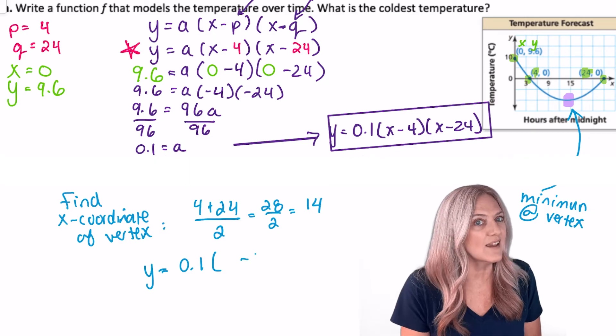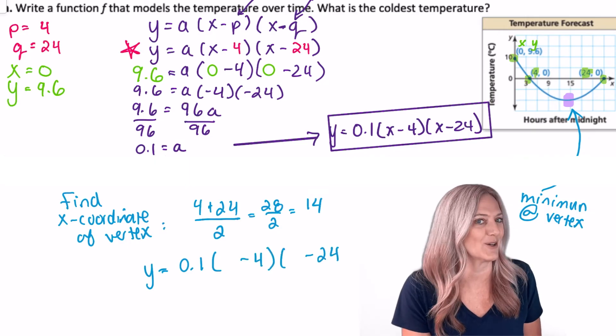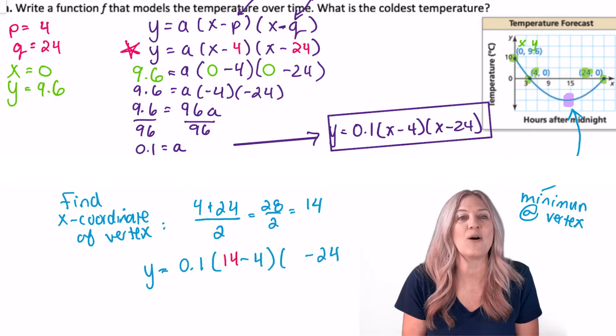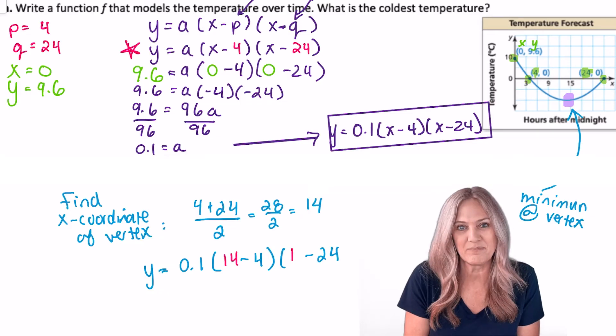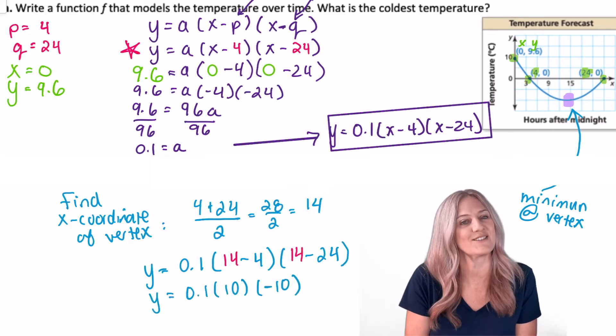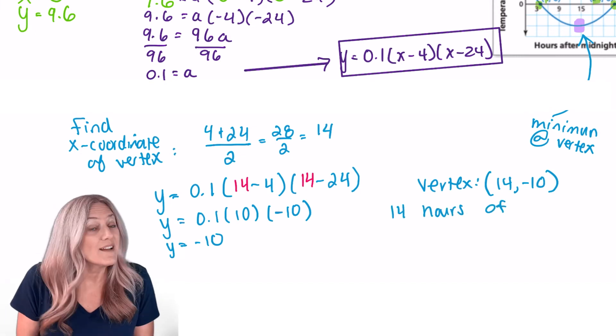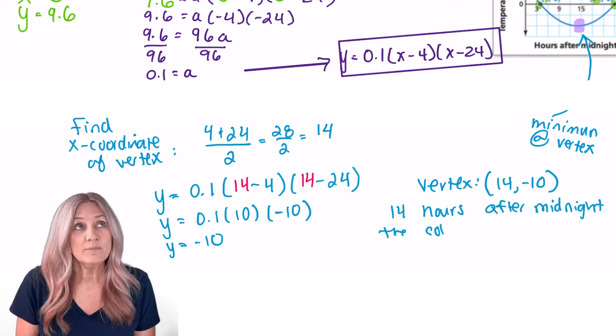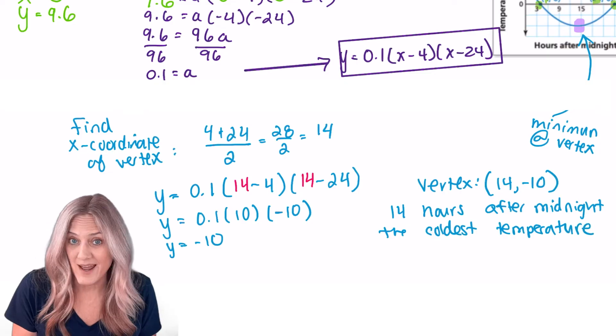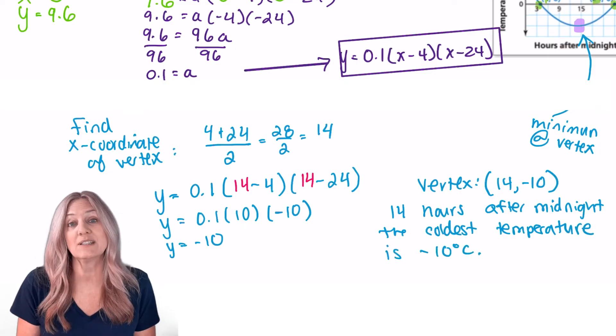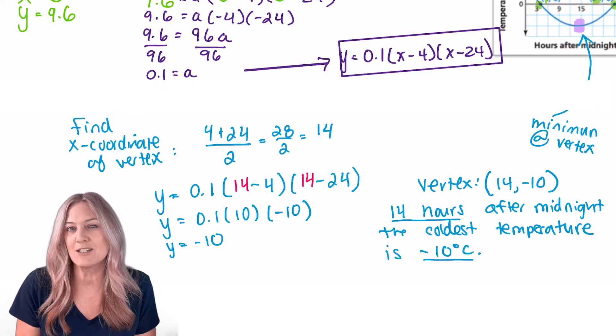Now we need to plug in—that's where the minimum occurs. We need to now find out what is the minimum. Plug in 14 for x and solve for y. So we have our y value is negative 10. But what does that really mean? Well, 14 hours after midnight, the coldest temperature is negative 10 degrees Celsius.